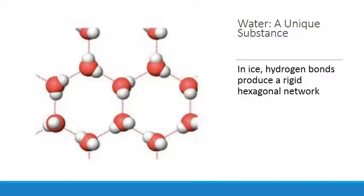Hydrogen bonds hold water molecules together to form the solid that we call ice. In ice, hydrogen bonds produce a rigid hexagonal network. The resulting molecular configuration is very open, so there are a lot of empty spaces.